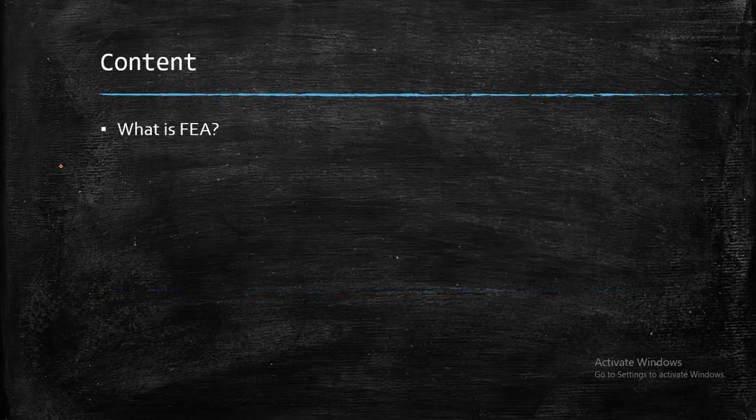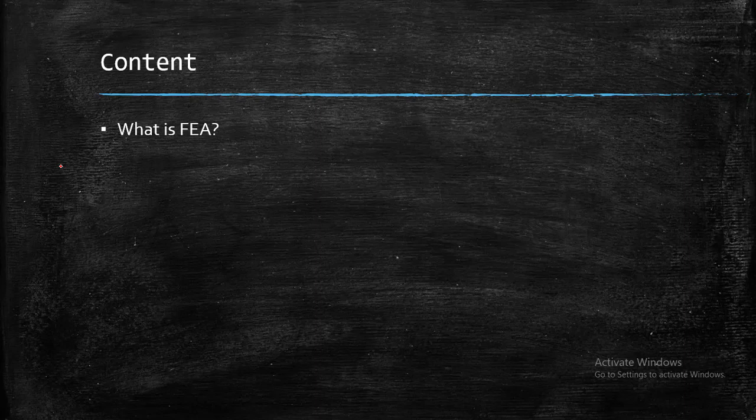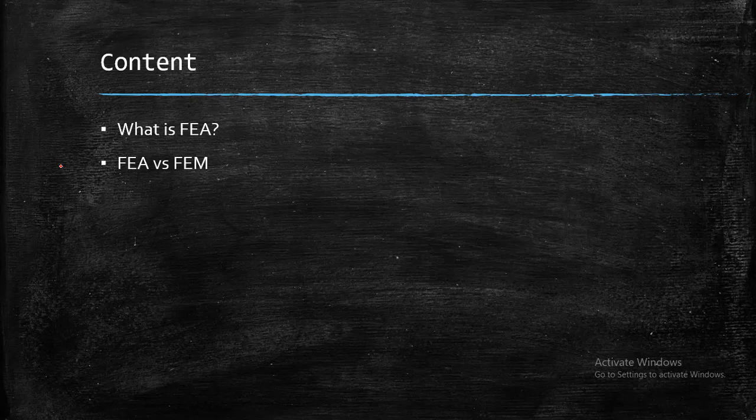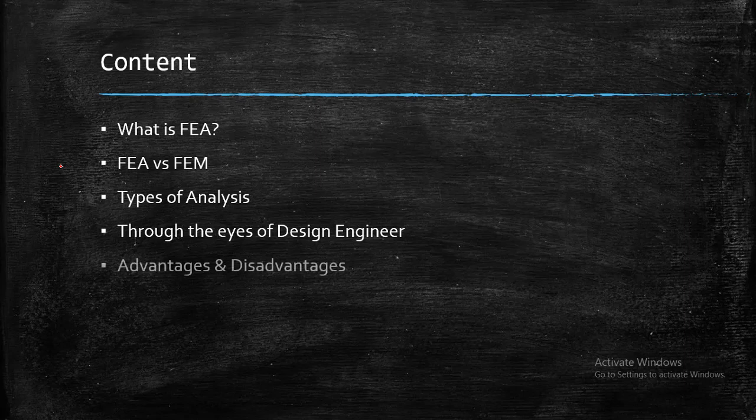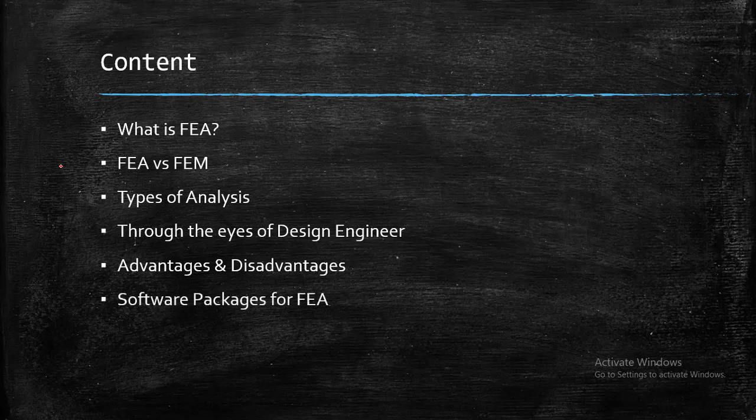We are going to see what is FEA, exactly the definition of FEA. Then is there any difference between FEA and FEM, that is Finite Element Analysis and Finite Element Method. Then we are going to see the different types of analysis and after that the FEA through the eyes of a design engineer. In the later slides we are going to see advantages and disadvantages of FEA. And at the end we are going to see what are the different softwares which can be used for solving FEA.